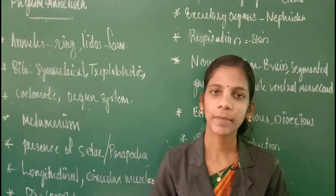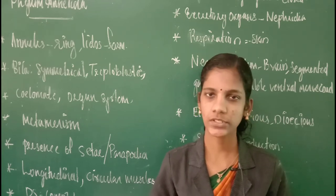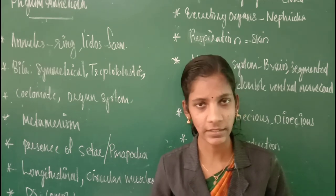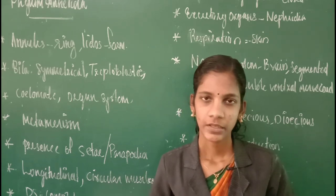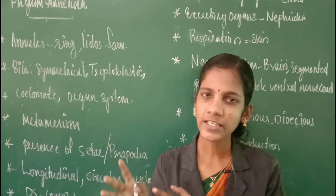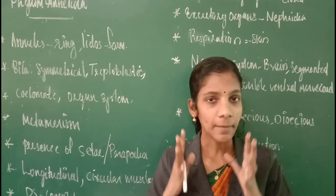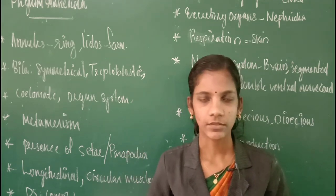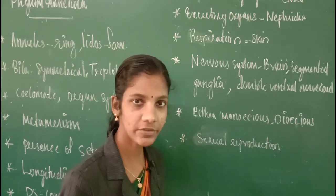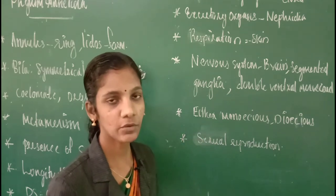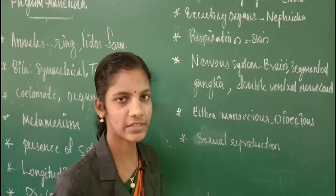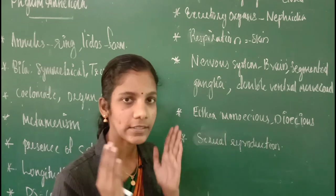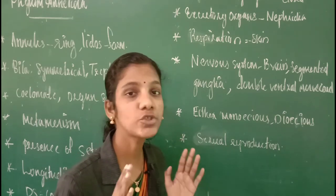The next identifying feature of phylum Annelida is the presence of a complete digestive system. Their digestive system is complete with the pharynx, esophagus, stomach, and intestine. There are specialized parts related to each function in their body — in short, there is a complete digestive system. This is another identifying feature of phylum Annelida: they have a closed circulatory system. In this type of circulatory system, we can see a heart as well as closed blood vessels, through which blood is pumped to different parts of the body. This is the first phylum where we can see closed blood vessels.